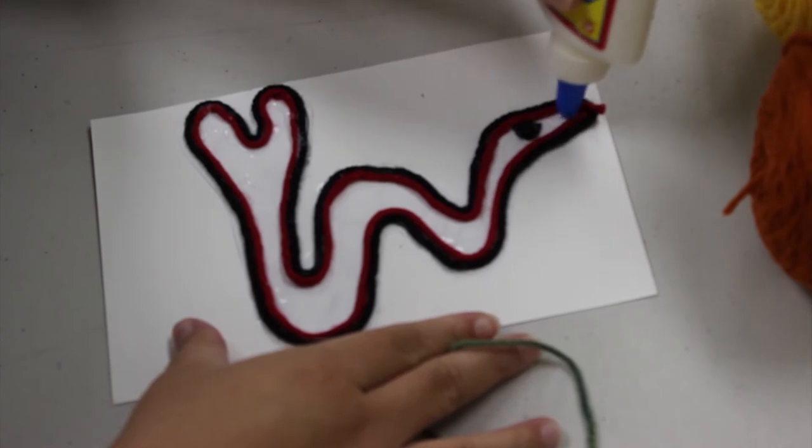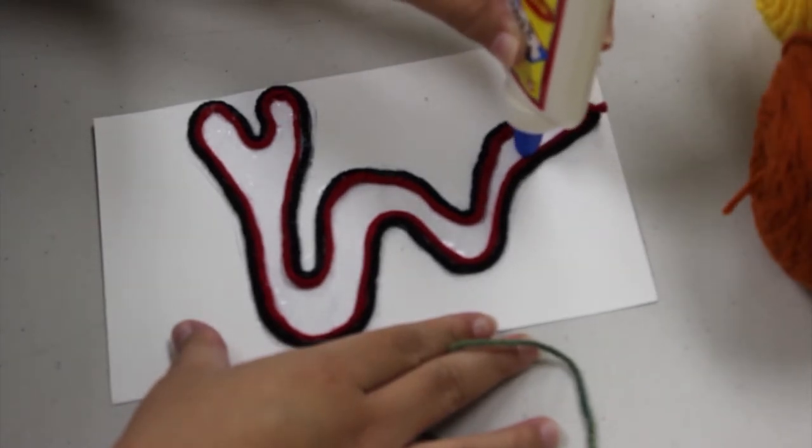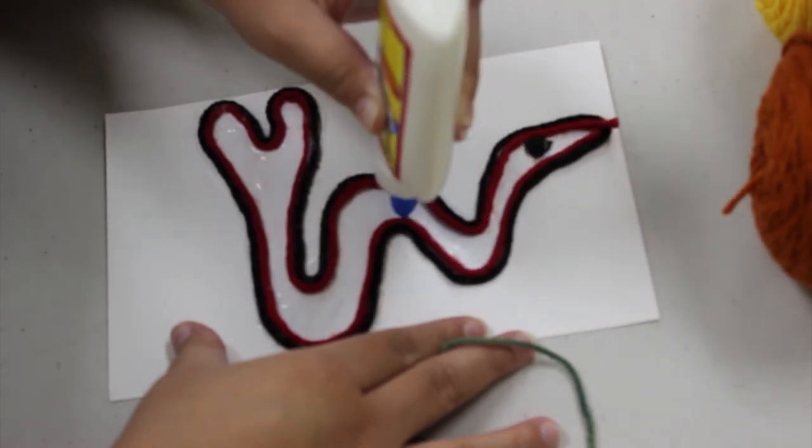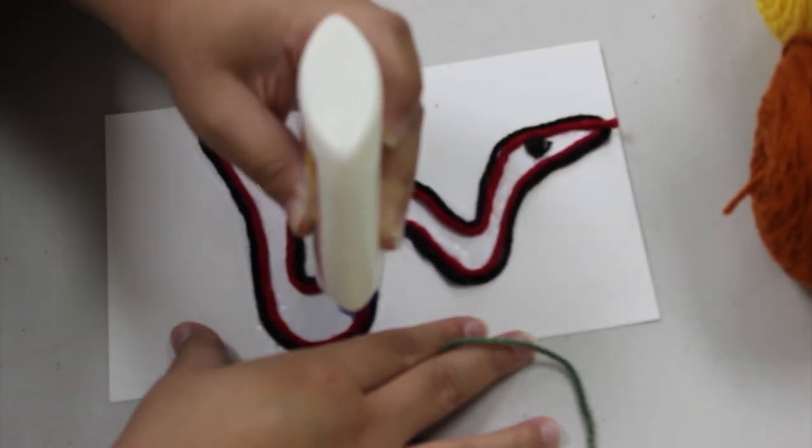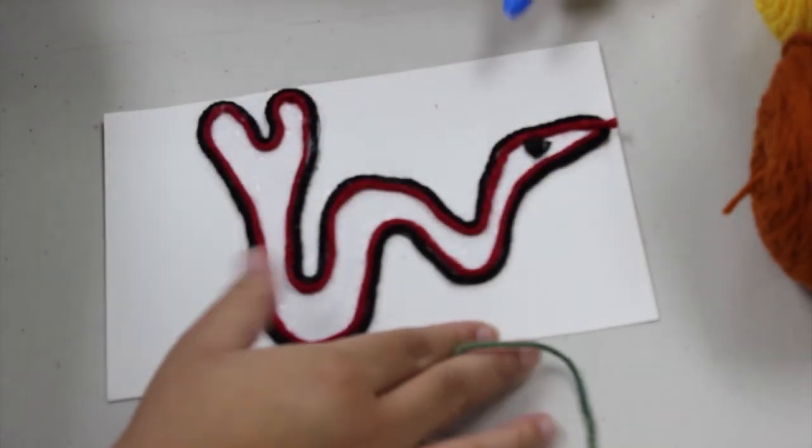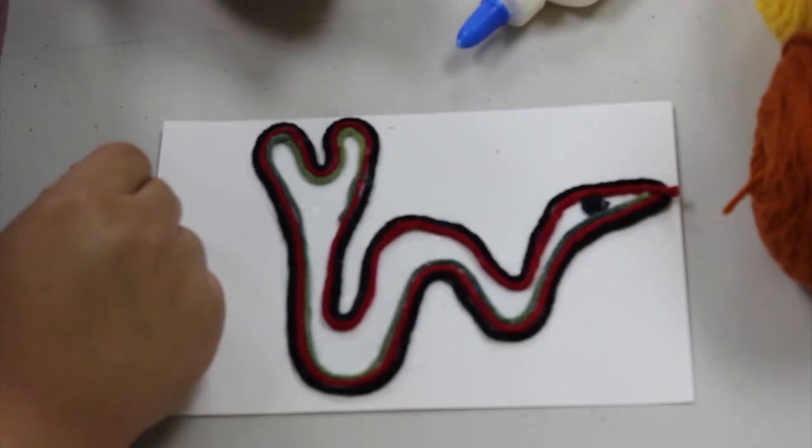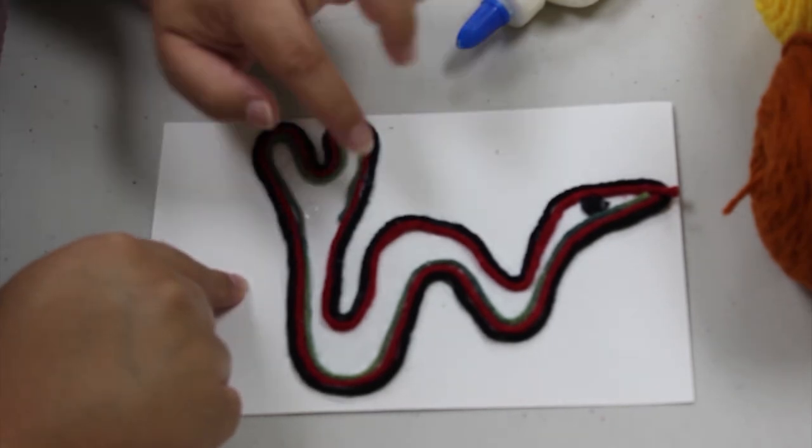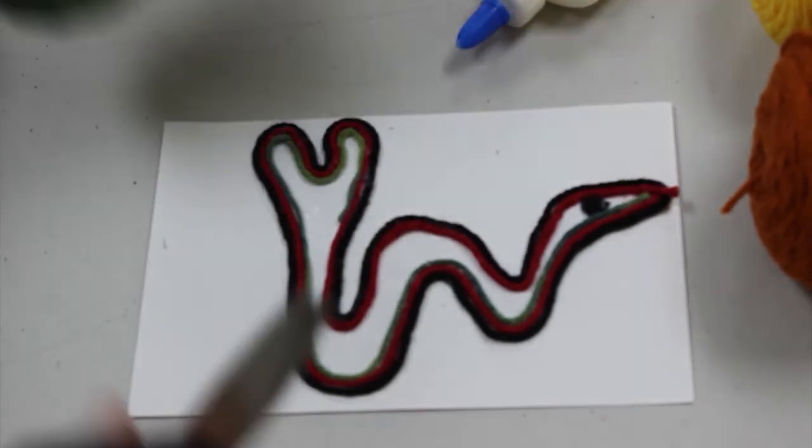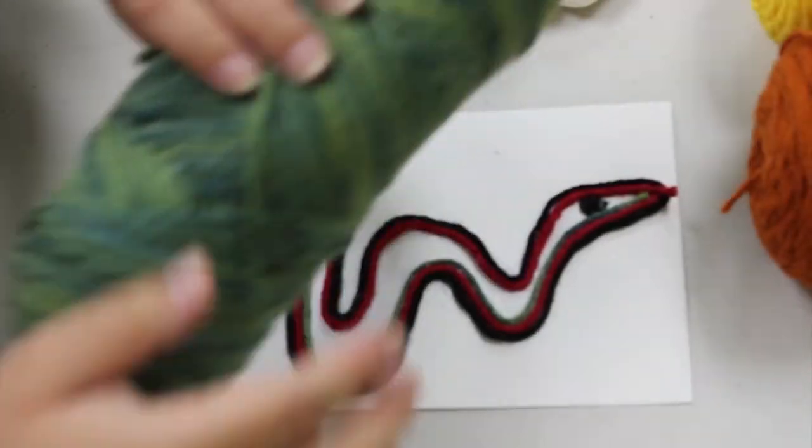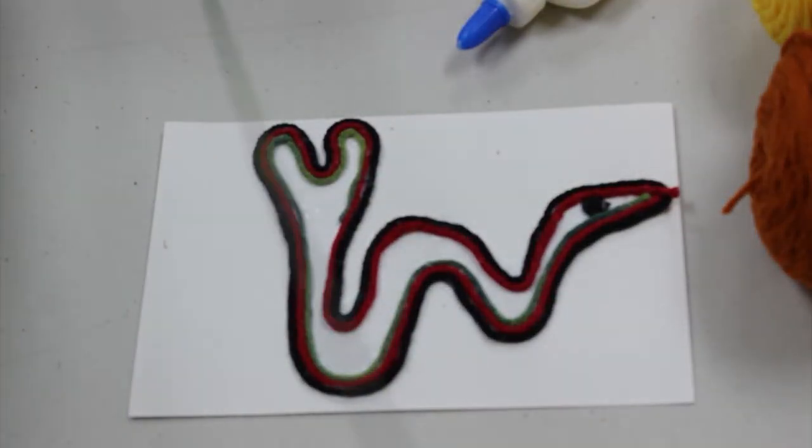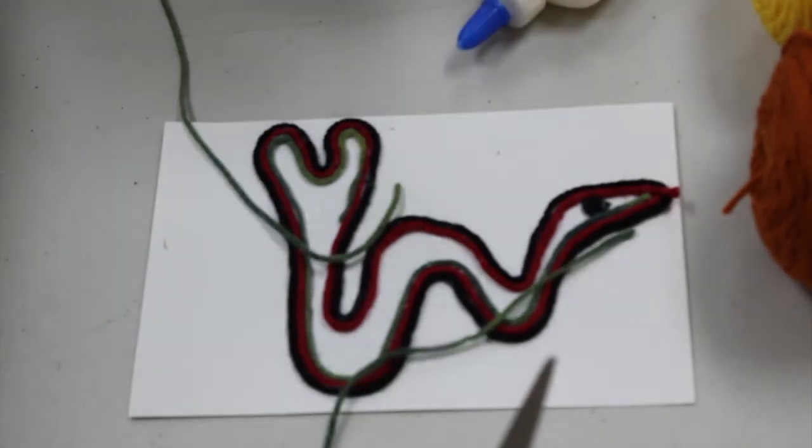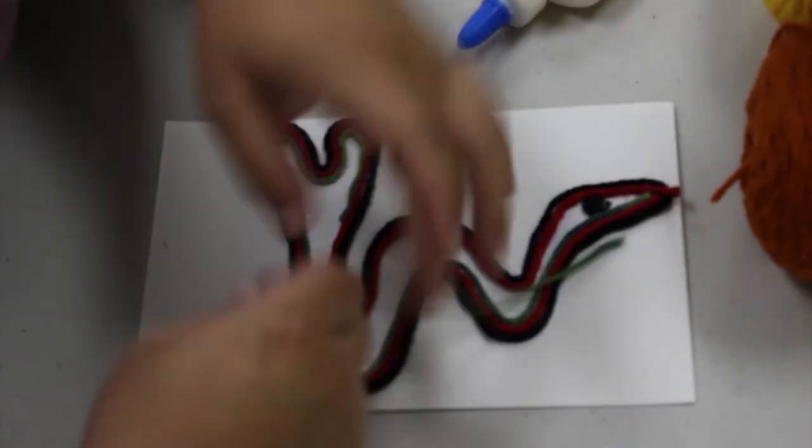I'm continuing on with my third color, and you can basically do as many colors as you'd like. You can stick to maybe a two-tone or monochrome. Really it's up to you. As you can see, I ran out of the green before I was done with my row, so I'm just going to get more thread from the spool to continue my snake.